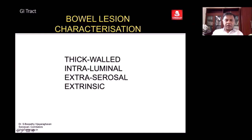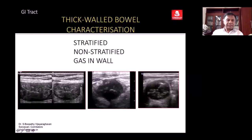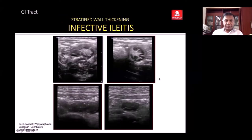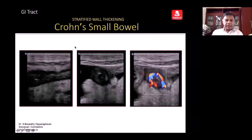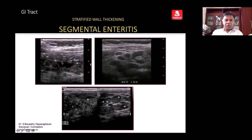There may be a thick-walled bowel, intraluminal lesion, or extra-mural enhancement due to thickening — this is called stratified thickening, where the stratified layers are still seen, both in longitudinal scan and short axis. In a patient presenting with pain abdomen and loose stools, in the right iliac fossa you see stratified wall thickening.